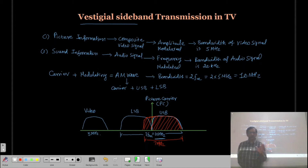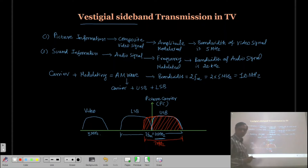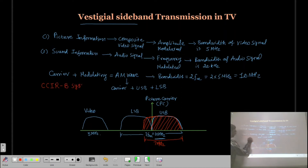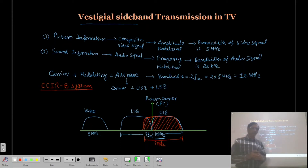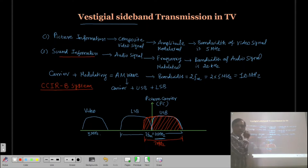How much portion of the lower sideband is transmitted is also standardized. In India, we use the CCIRB system, where everything is defined — how much of the lower sideband and how much of the upper sideband is transmitted. Along with this, we also have to transmit the sound information, which is a frequency modulated wave.